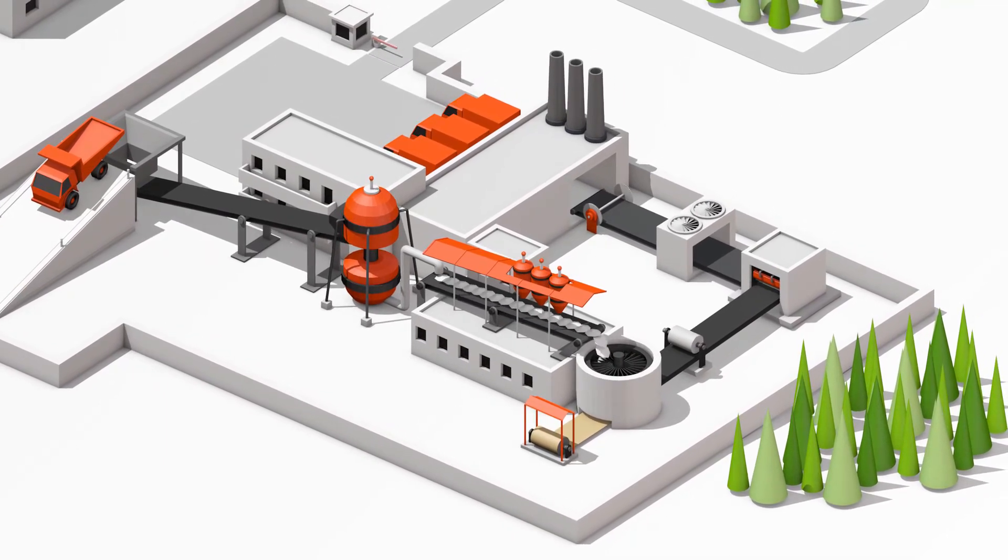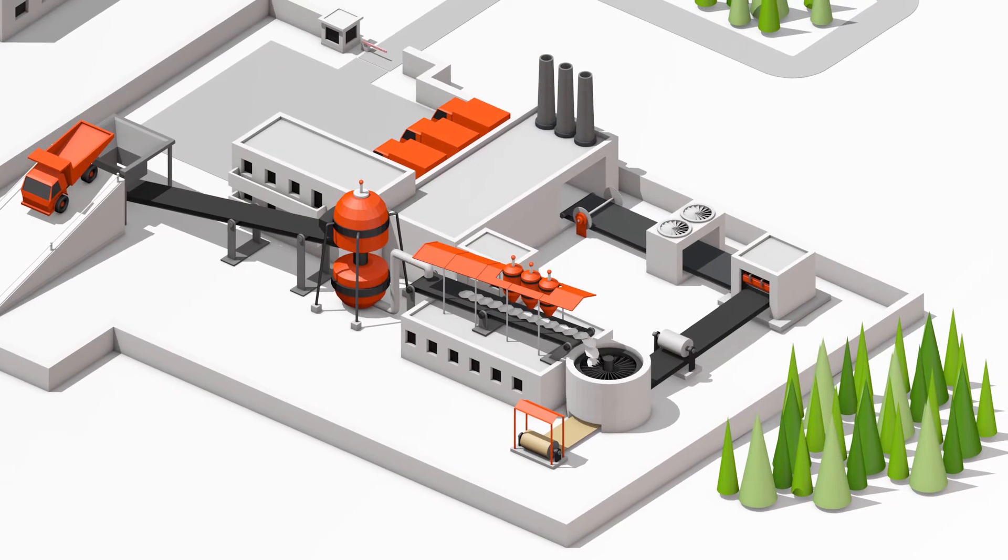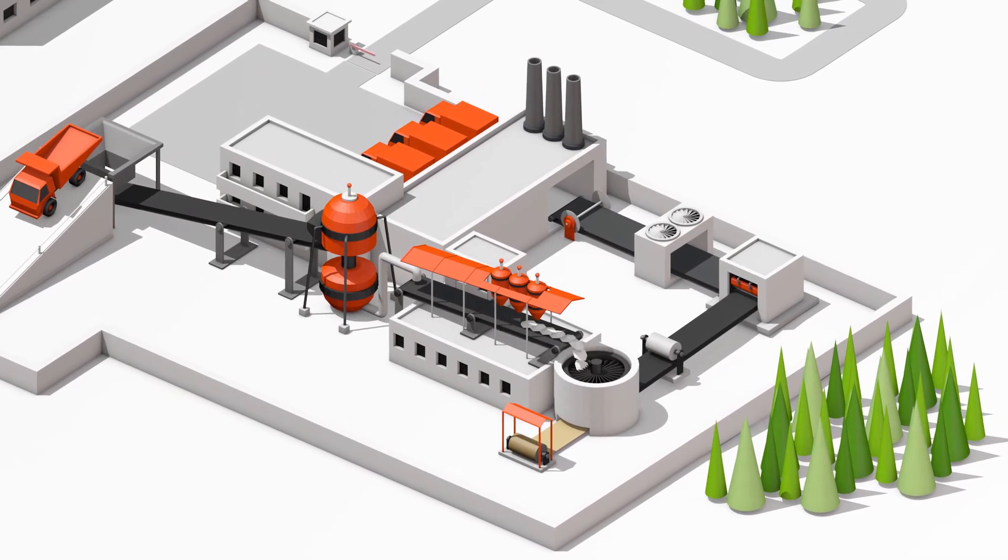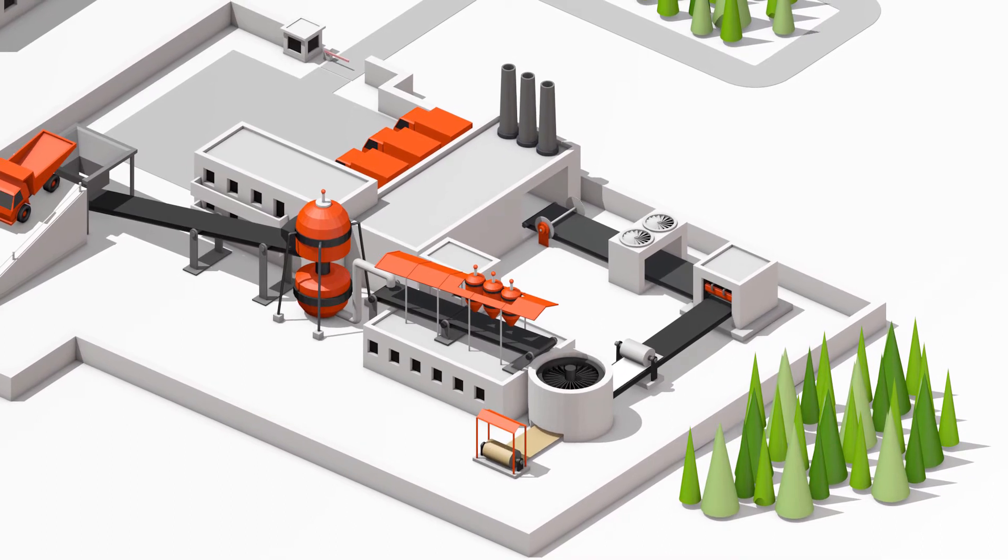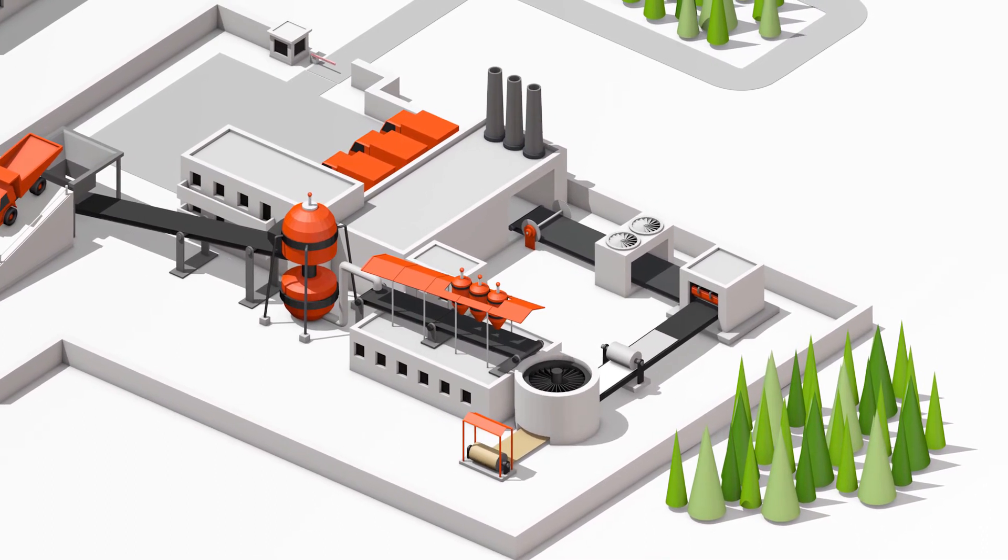And then it's off to the board forming line. We pour the gypsum mixture between two huge rolls of paper. This slurry sandwich then passes through a pair of forming plates.